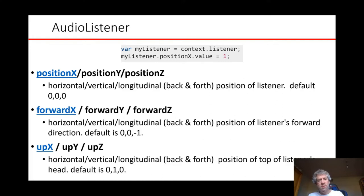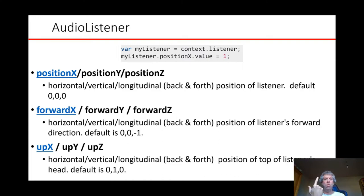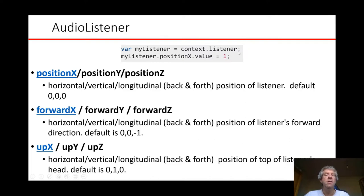Position defaults to the center of the coordinate system. Up means pointing vertical, and the forward direction given the right-hand rule points away — negative z. It's accessed as a property of the context: context.listener. You can set values like position.x directly on it.